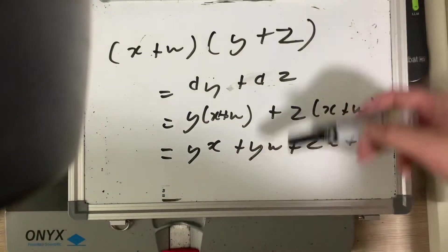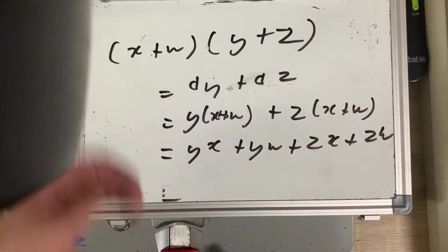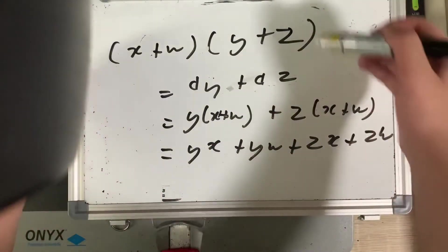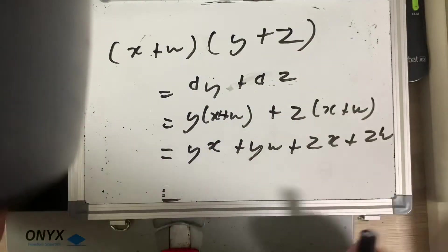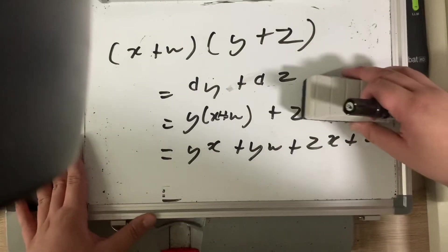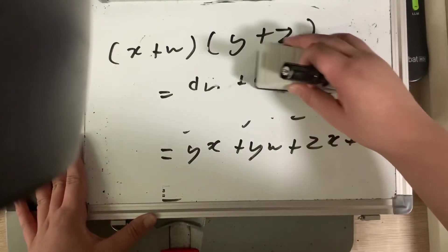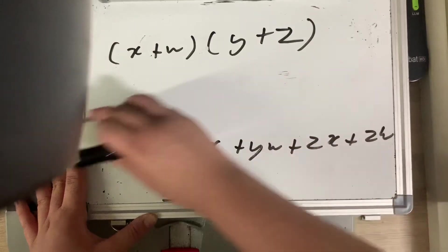However, this took quite a number of steps. Is there a way to do it in a more direct fashion, to get from here to here? Let's look at a few patterns that we see. Why don't we get rid of all the intermediate steps for now. We can see a few patterns.